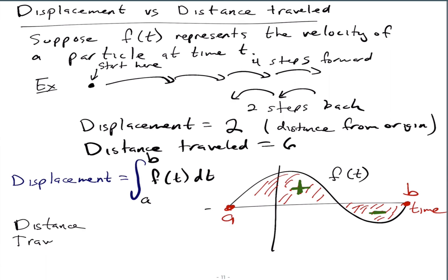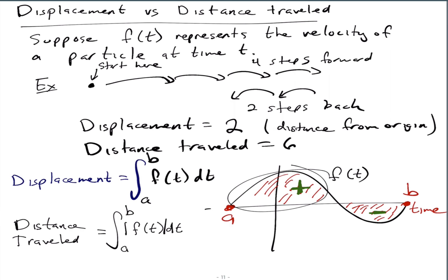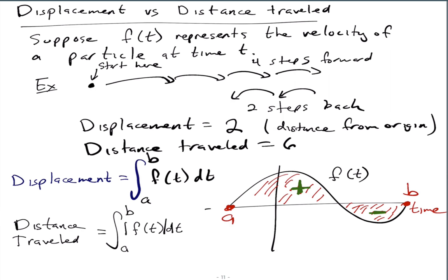The distance traveled would be the integral from a to b of the absolute value of f(t) dt. So basically you count everything as positive — what's above the x-axis is positive, and what's below the x-axis you also count as positive. Does that make sense?